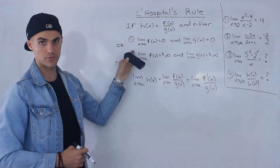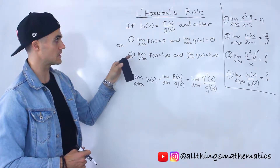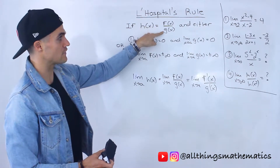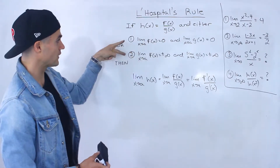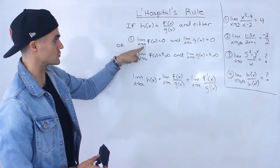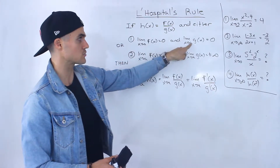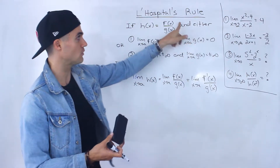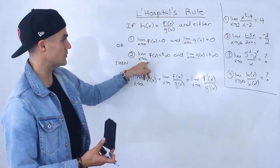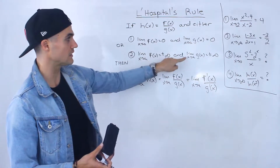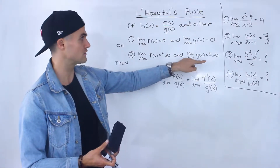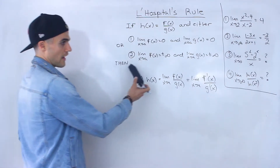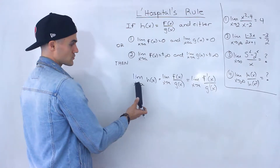We can use L'Hôpital's Rule for those limits. What L'Hôpital's Rule says is that if h(x) equals f(x) over g(x), and either one of these two scenarios happens: either the limit as x approaches a of f(x) is 0 and the limit as x approaches a of g(x) is 0, giving us that 0 over 0 format, or the limit as x approaches a of f(x) is plus or minus infinity and the limit as x approaches a of g(x) is plus or minus infinity, giving us that ±∞ over ±∞ format — then this is what L'Hôpital's Rule is.